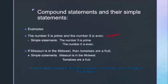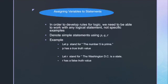We can also use an if-then structure to combine statements. For example: 'If Missouri is in the Midwest, then tomatoes are a fruit.' Those are two simple statements, both of which are true. One thing to point out is that compound statements don't need to make intuitive sense or have related parts — we're going to get there, I promise. When working with simple statements, we want to assign variables to them, which is necessary in order to develop the rules for logic — so we can work with any logical statement, not just specific examples.